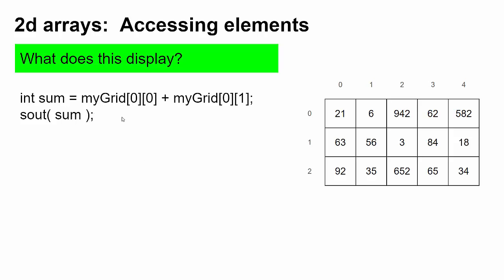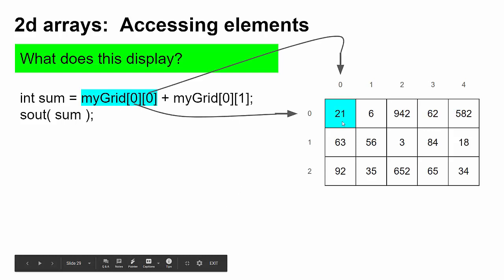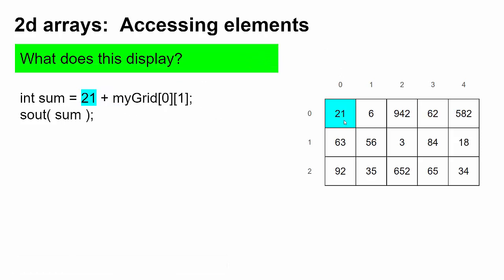Think for a second, what do you think this should display? myGrid[0][0] refers to row zero, column zero. So this entire expression gets replaced by the value that's saved in the grid there.